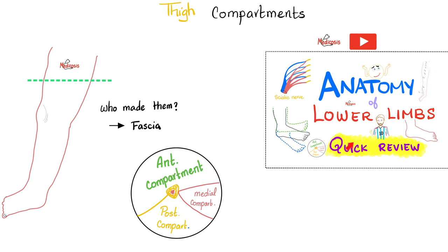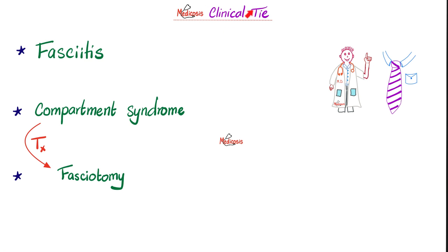If you remember my video on the anatomy of the lower limbs, quick review: we talked about the thigh compartments. There is the anterior compartment of the thigh, posterior compartment of the thigh, and medial compartment of the thigh. Who divided them into these compartments? The answer is fibrous septae — and they are part of the fascia.